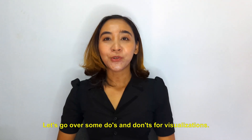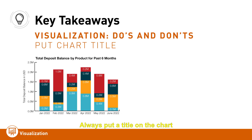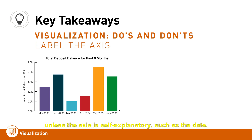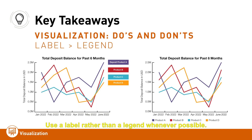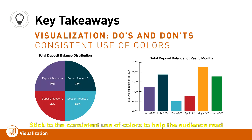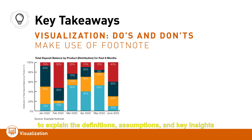Let's go over some dos and don'ts for visualizations. Always put a title on the chart so the audience knows what to expect. Label the axes at all times unless the axis is self-explanatory, such as the date. This allows the audience to understand whether the data analyst used average or total deposit balance. Use a label rather than a legend whenever possible. Stick to consistent use of colors, and use footnotes to explain definitions, assumptions, and key insights.